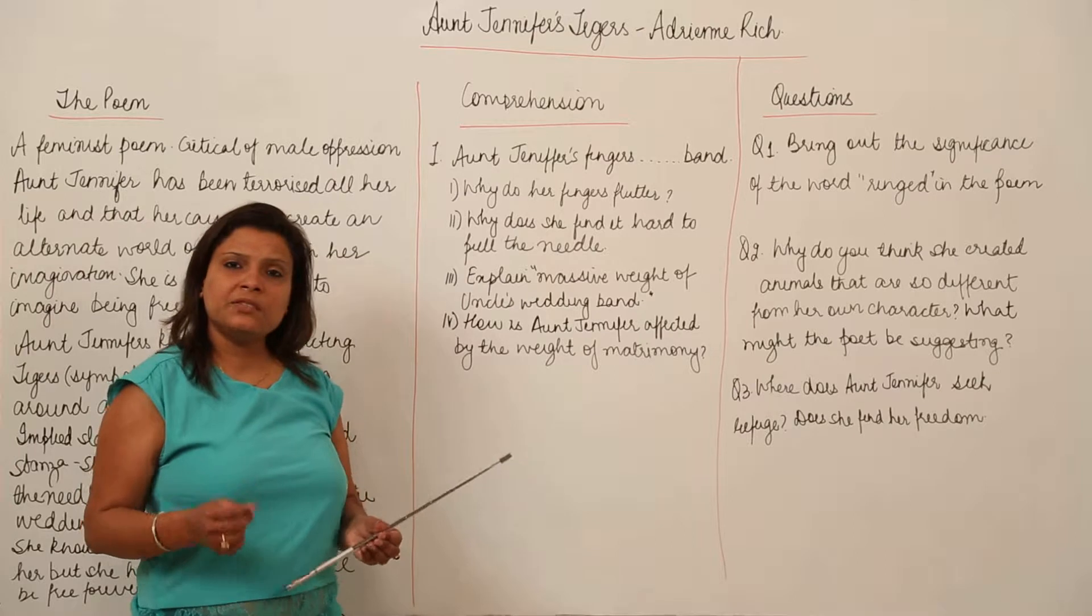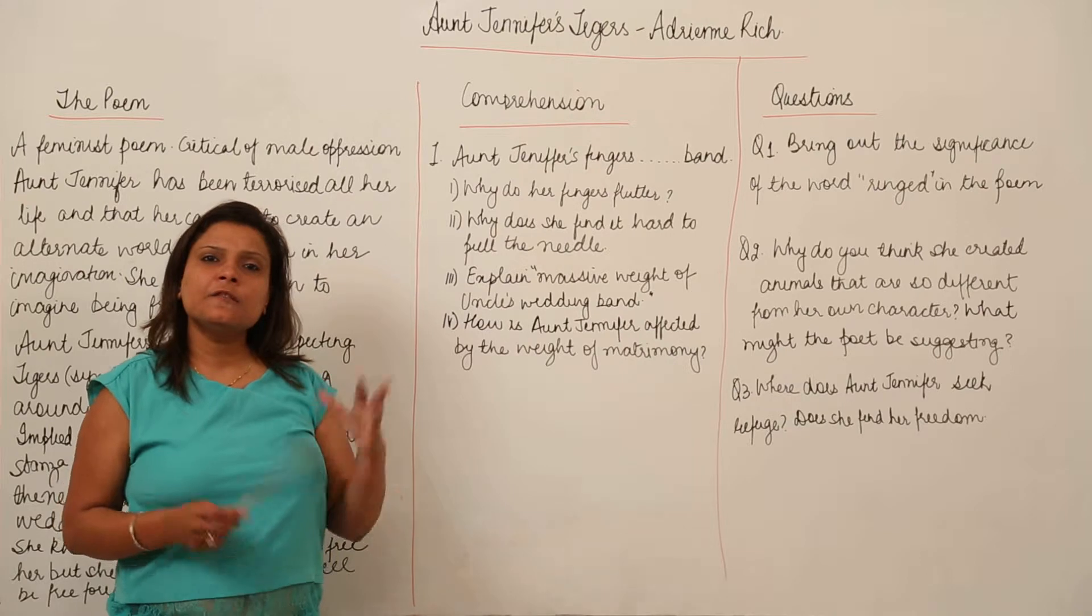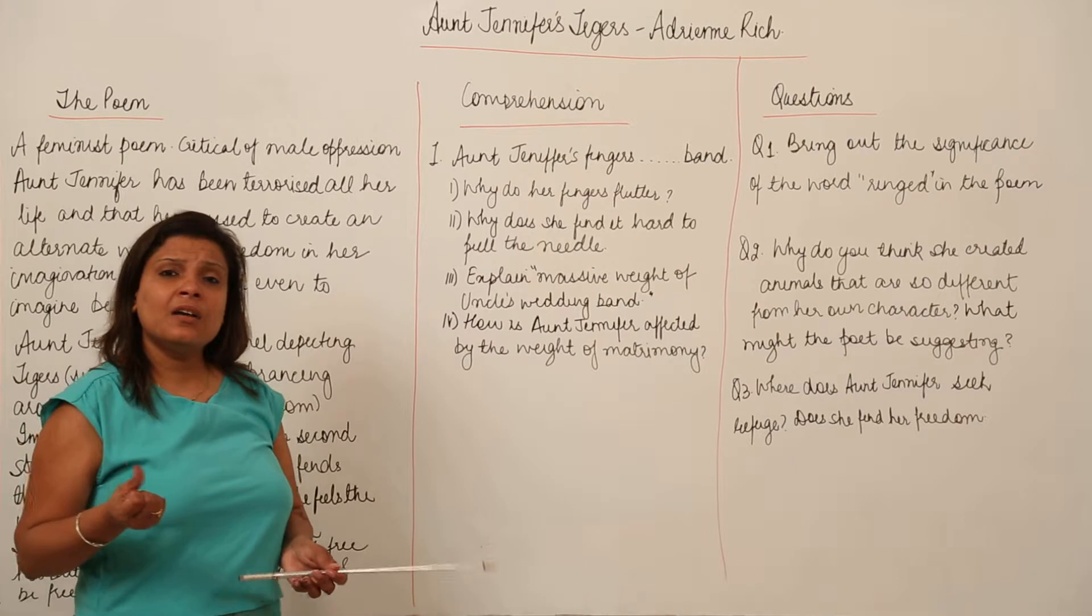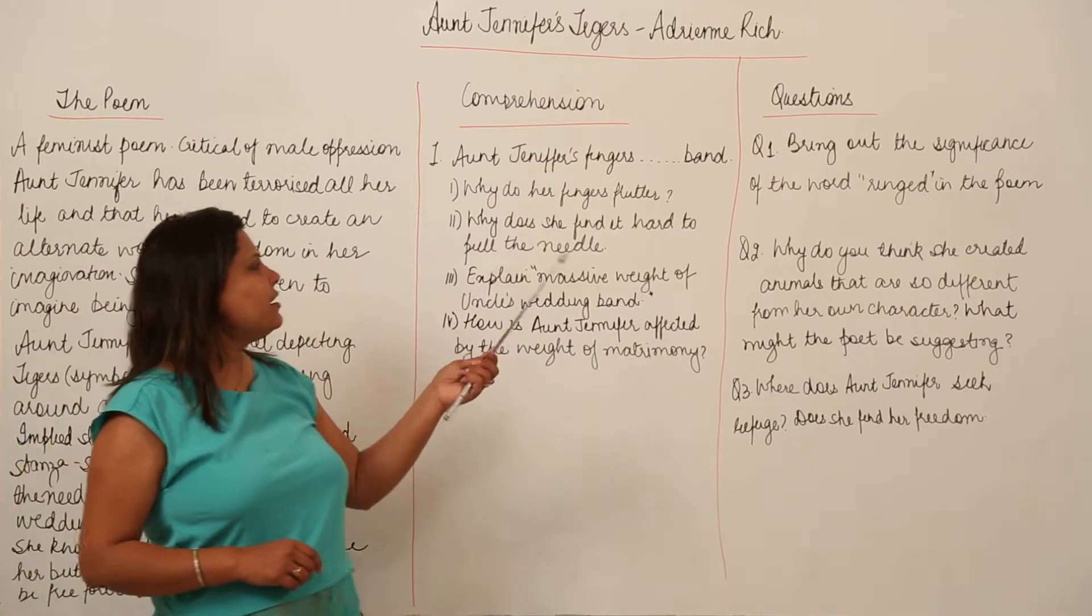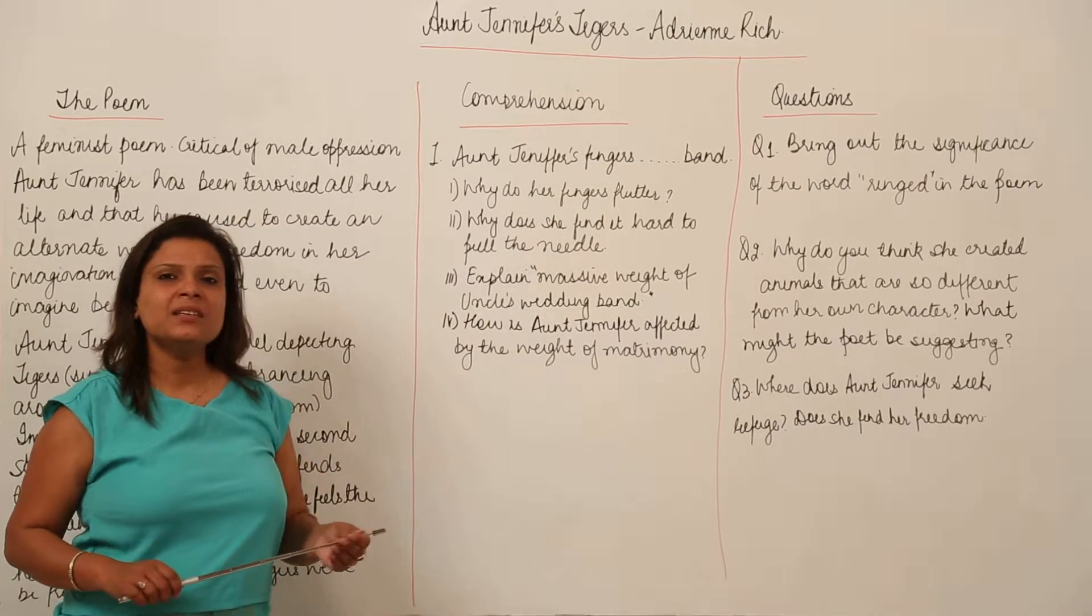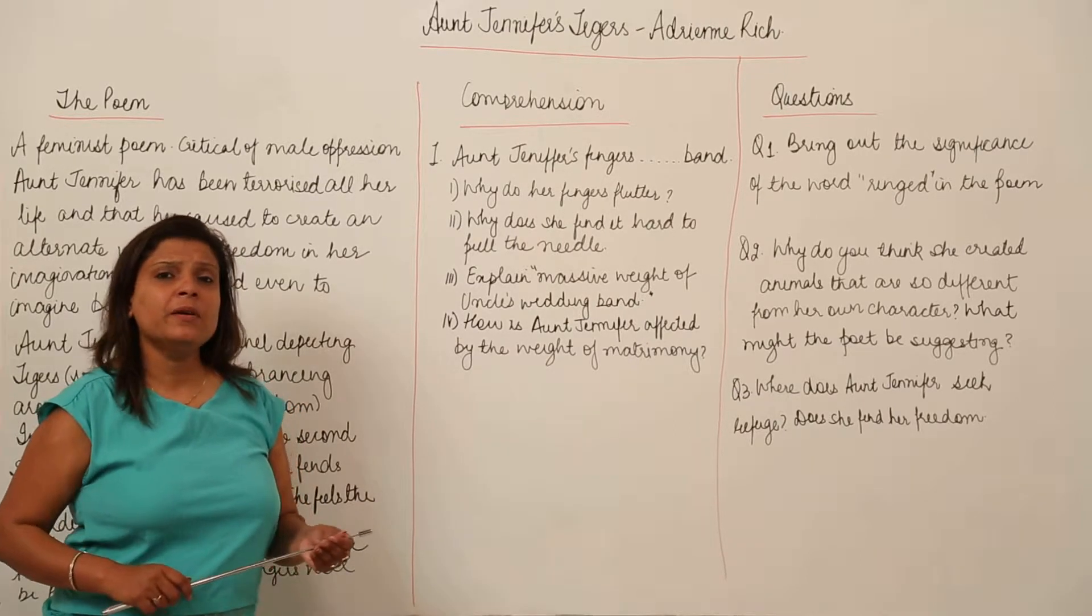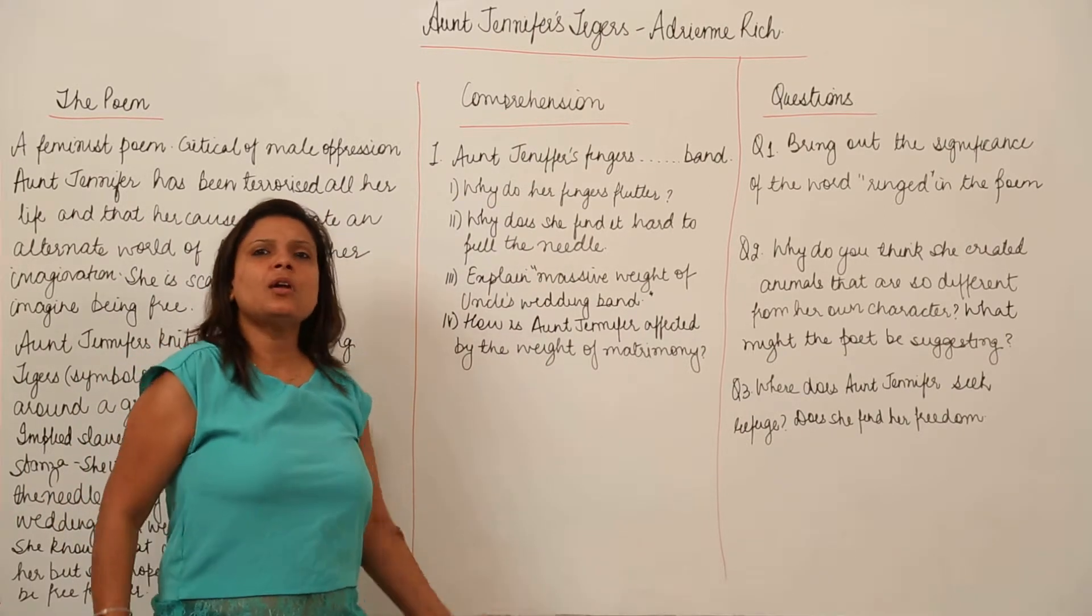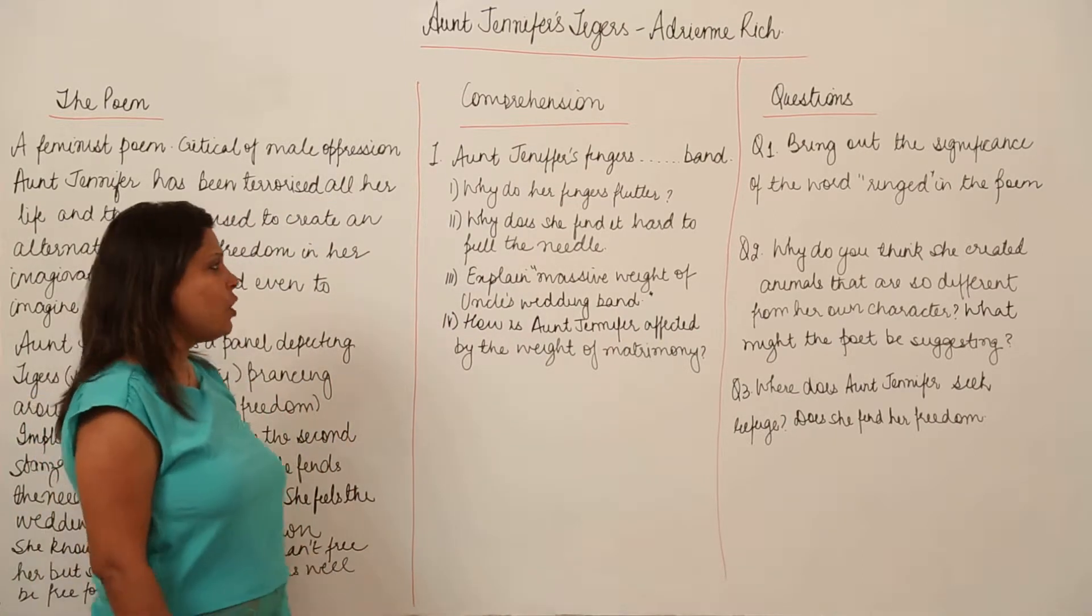She is making a tapestry which is symbolizing, which is depicting free tigers in a free forest. And she is scared, she is nervous even to start knitting it. Then why does she find it hard to pull the needle? She feels weighed down by her life, by her marriage and she feels the needle to be very heavy because even in her dreams, she is not able to, even in her imagination, she is not able to feel free. She has been so badly and so long oppressed.